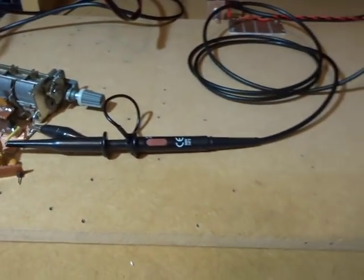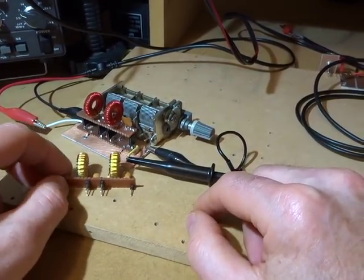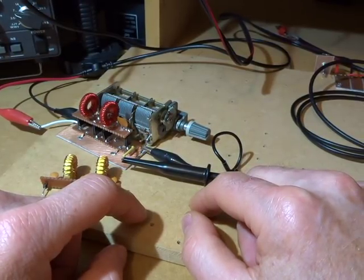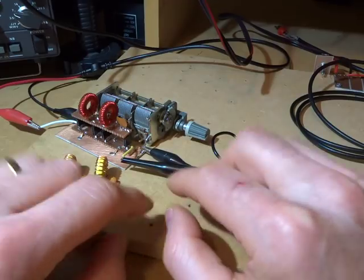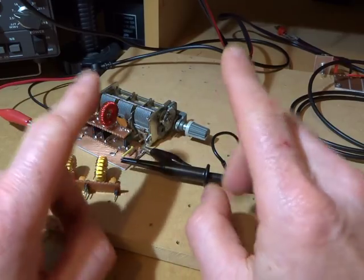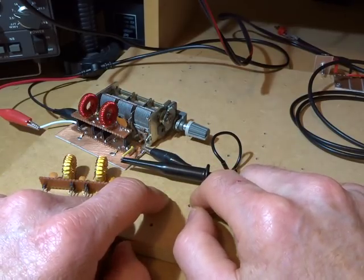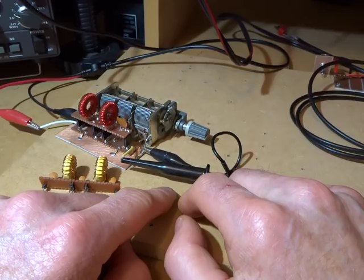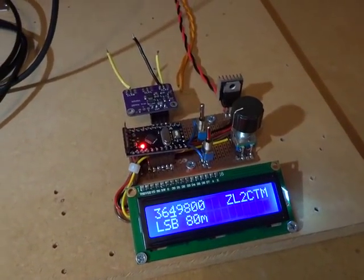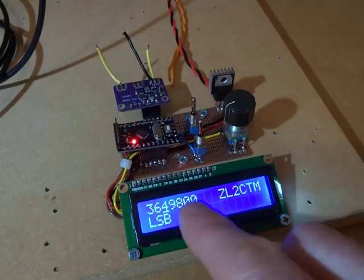So next steps will be to do the RF amplifier, and then we've got enough pieces to at least put together a direct conversion receiver for a start, just to test out what's been produced to date, and then make up those two bidirectional IF amplifiers, which we can then place on either side of the crystal filter, and ultimately turn it into a superheterodyne receiver.